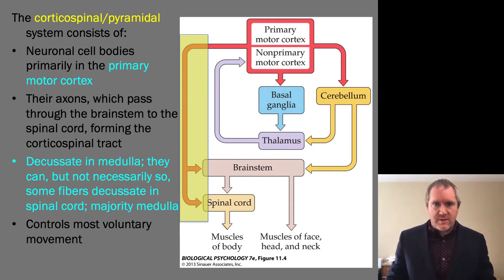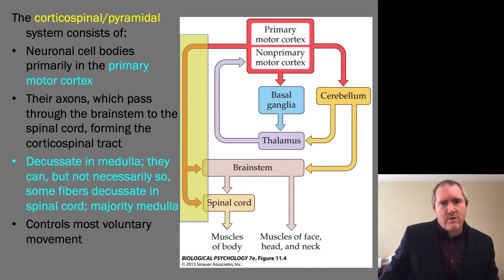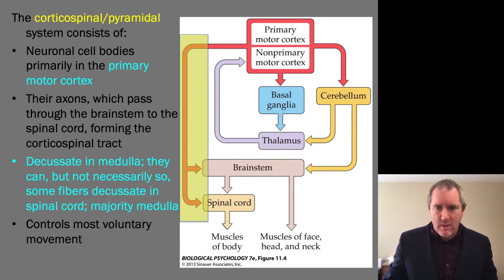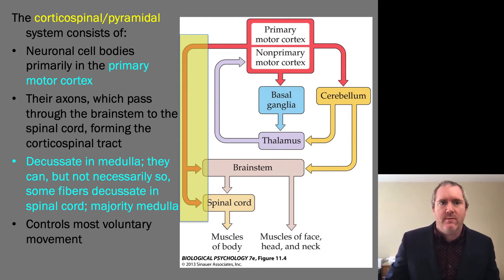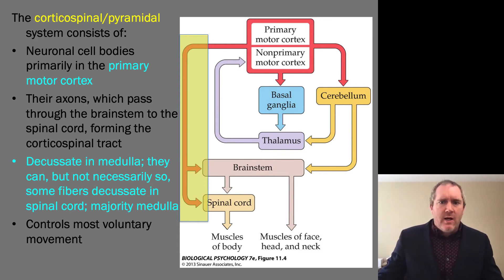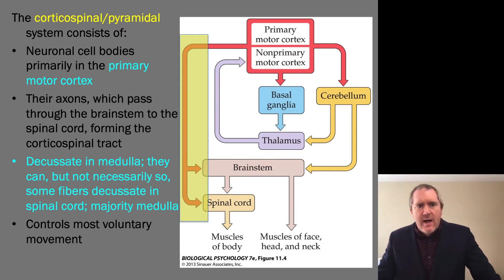The corticospinal or pyramidal system consists of neuronal cell bodies primarily in the primary motor cortex. Their axons pass through the brainstem to the spinal cord, forming the corticospinal tract. This would then decussate — meaning cross — in the medulla. This is the primary reason that a stroke to one side of the brain is going to affect the opposite side of the body. It crosses in various places, and it's very important to recognize where these crossings occur.